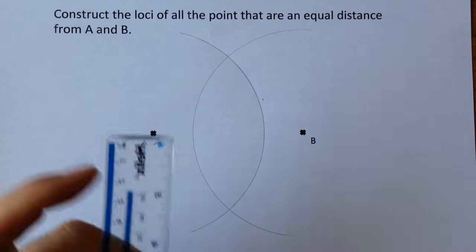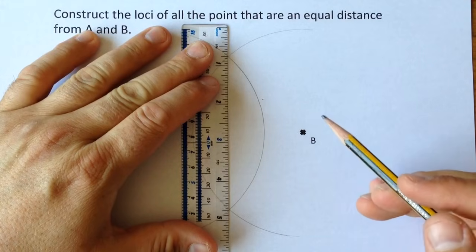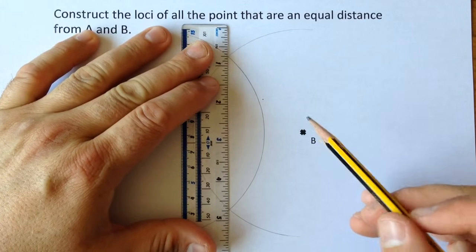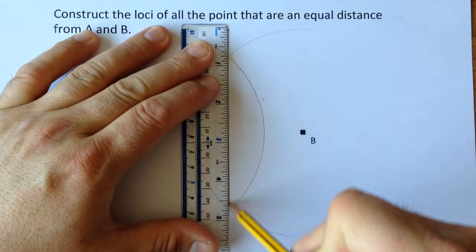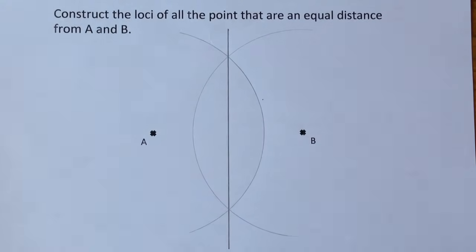Now, get your ruler and your pencil, line up where the two cross, and the line you've just drawn is all the points that are an equal distance away from A and B.